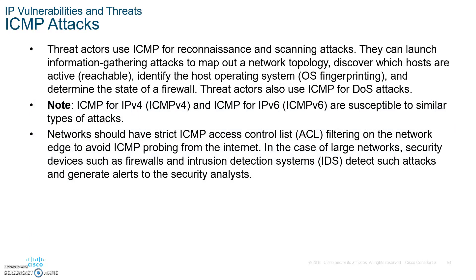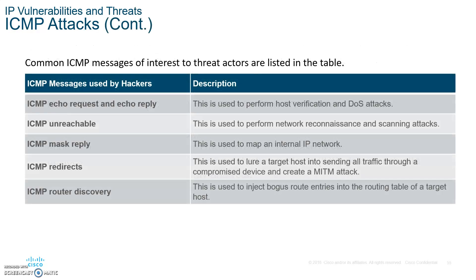ICMP uses echo requests and echo replies. The Internet Control Message Protocol has many different message types you can use to gather information. You can use ICMP to do footprinting — determine what operating system a target is running, whether it's Linux, macOS, or Windows — so you know what tools and attacks are applicable to that specific system.